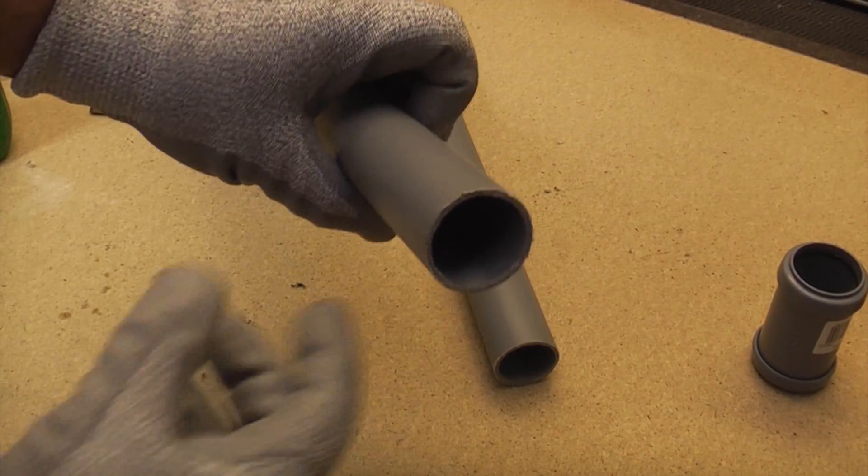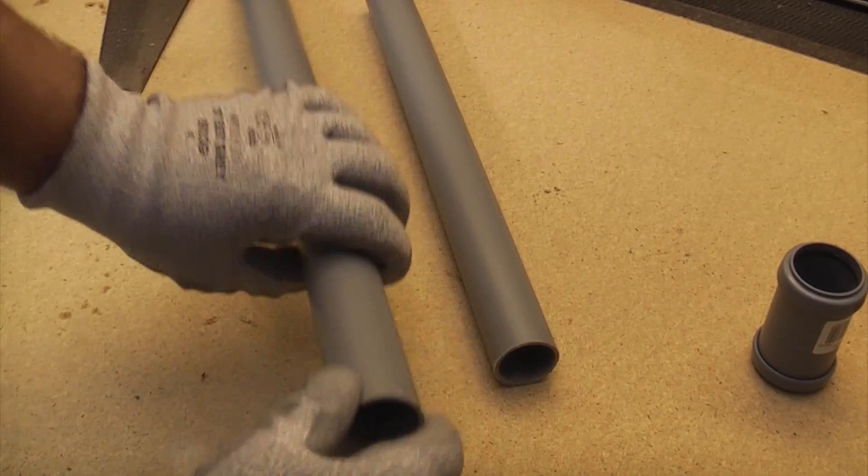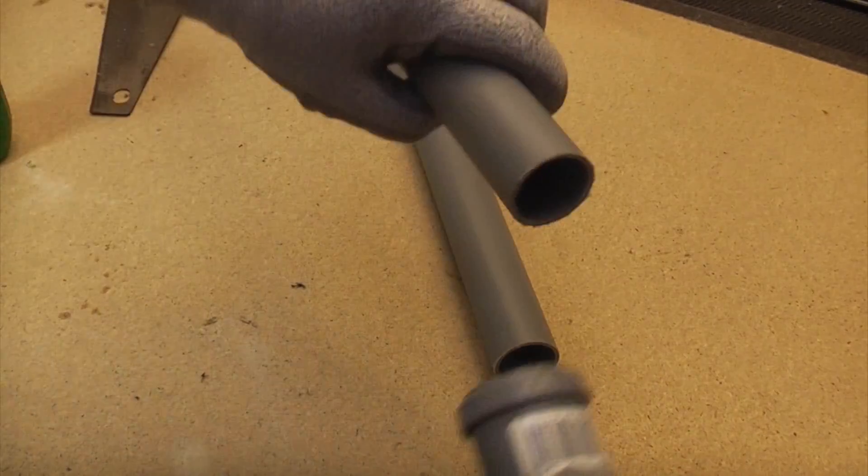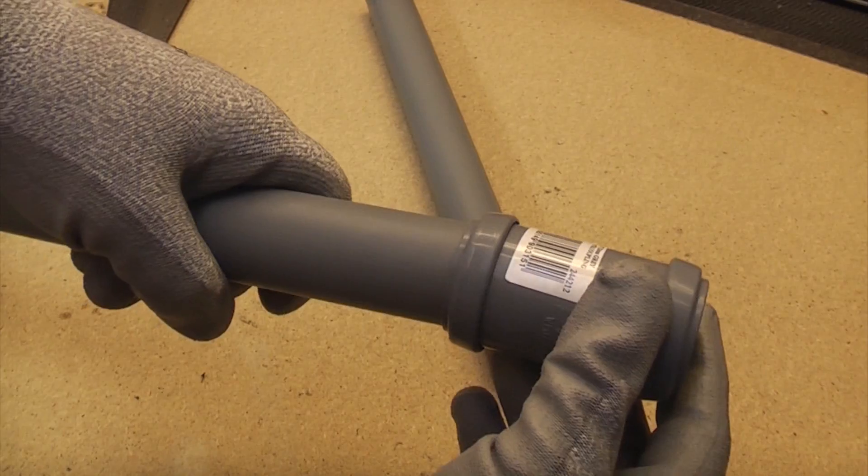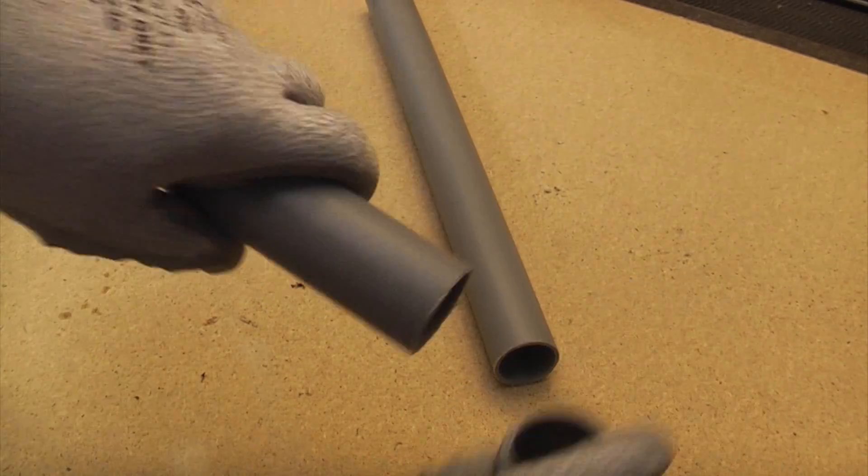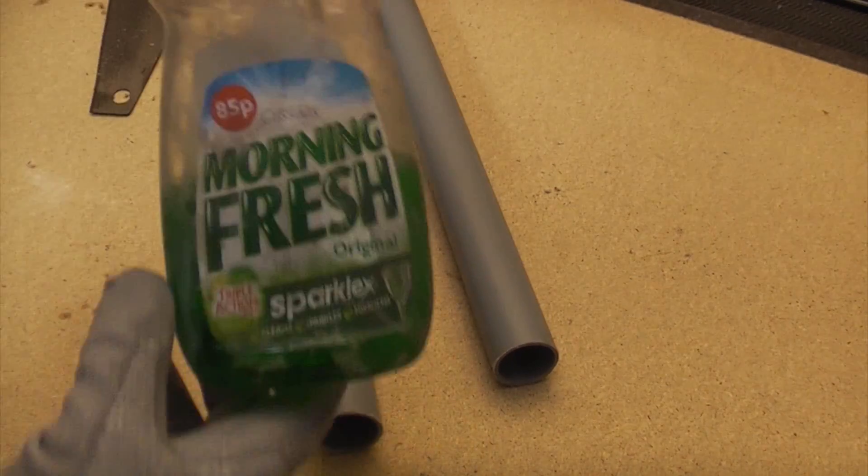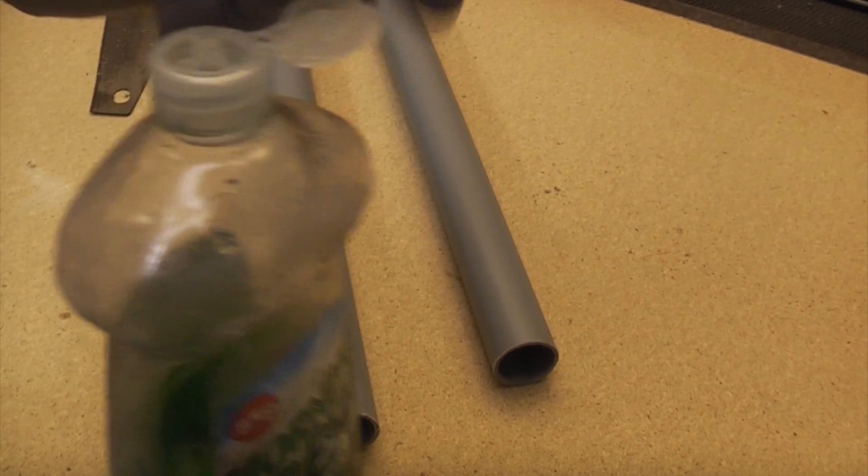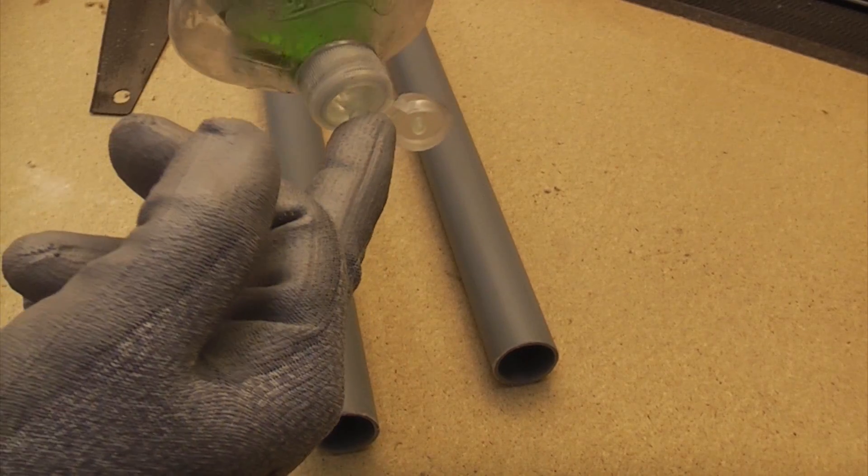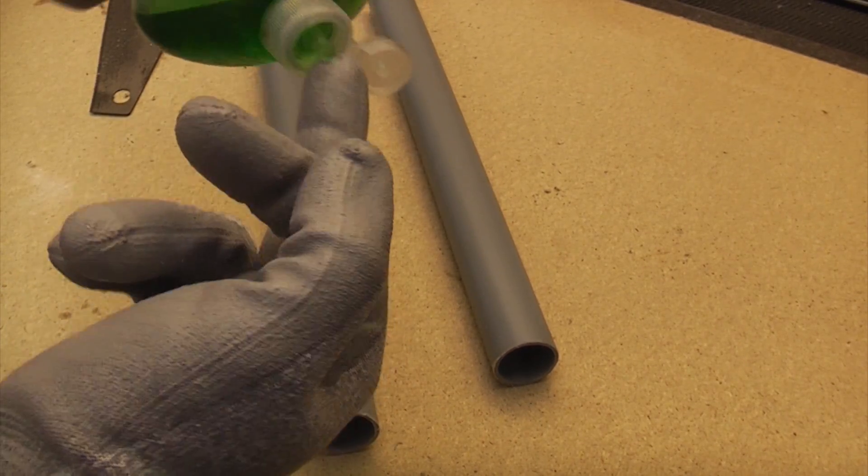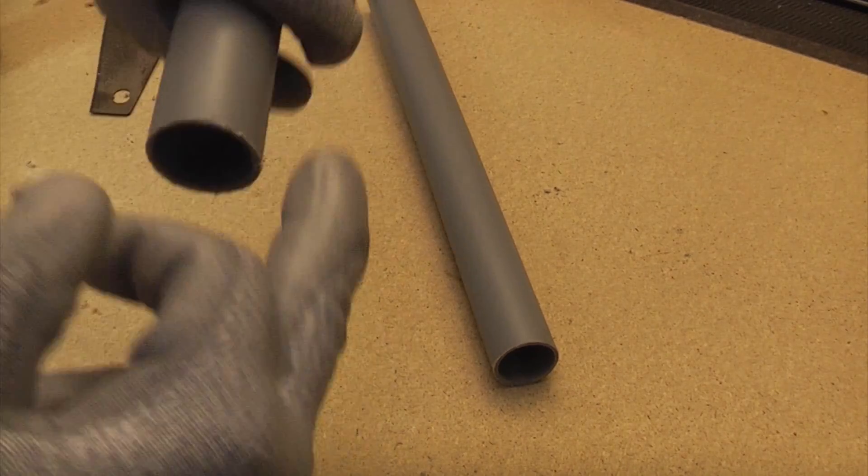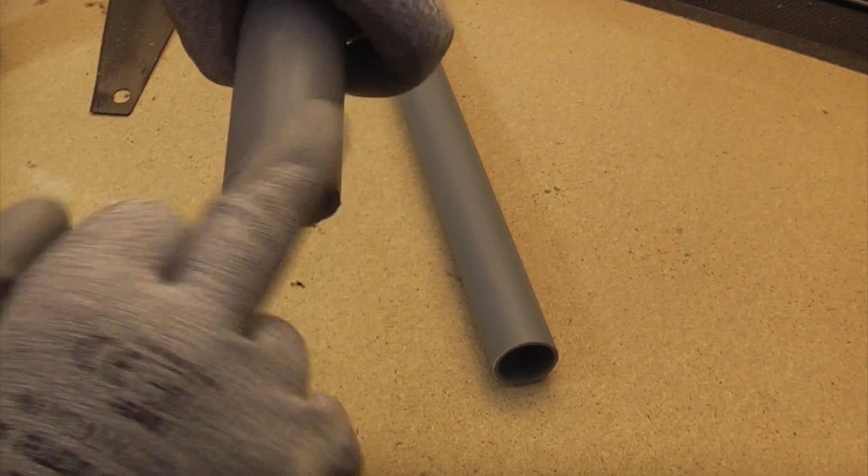So we've removed the burrs now from the two pieces, so now we can push the pipe straight into the actual fitting. But before we do that, we're just going to lubricate the pipe a little bit using some washing up liquid. And this actually makes the pipe go in a hell of a lot easier.